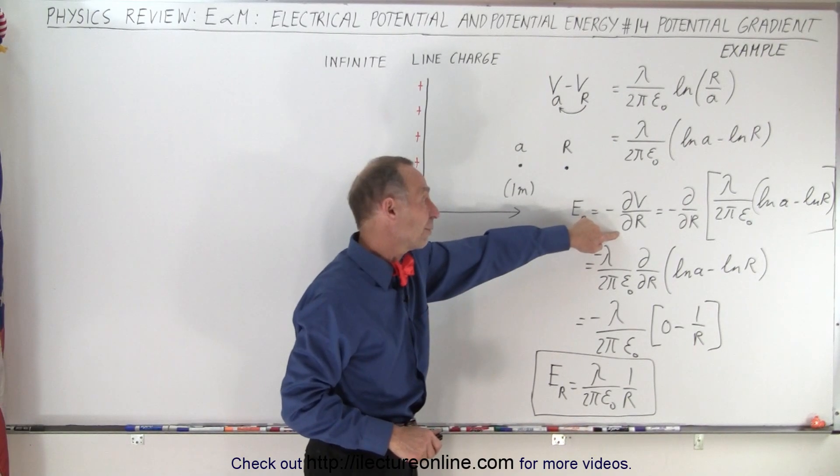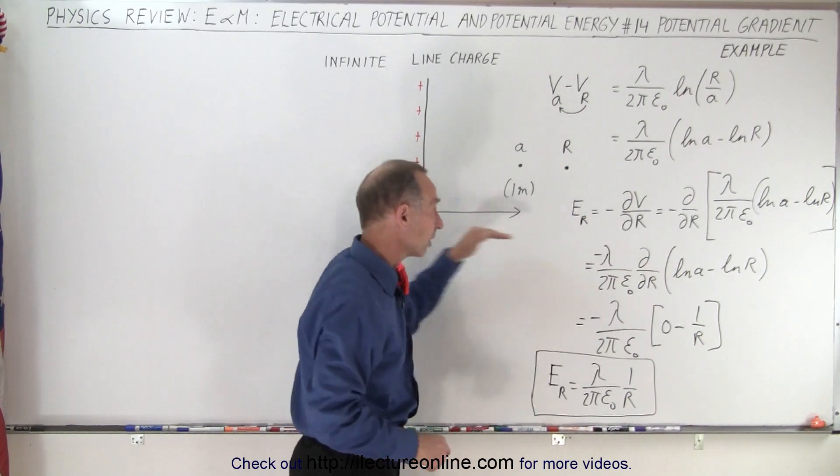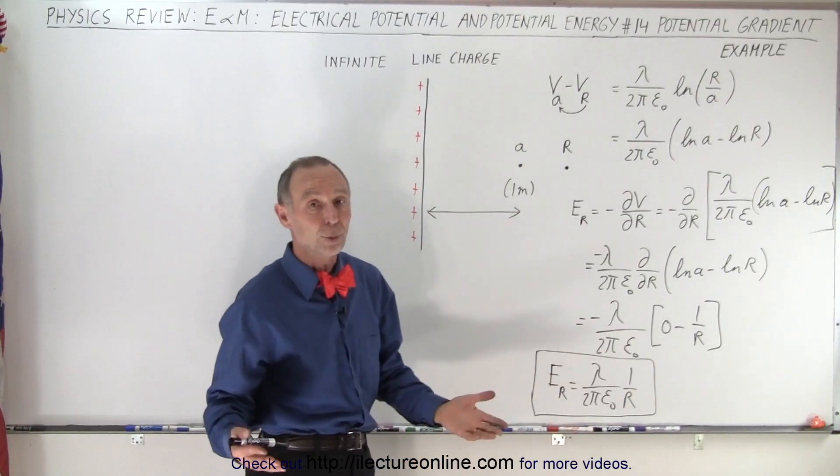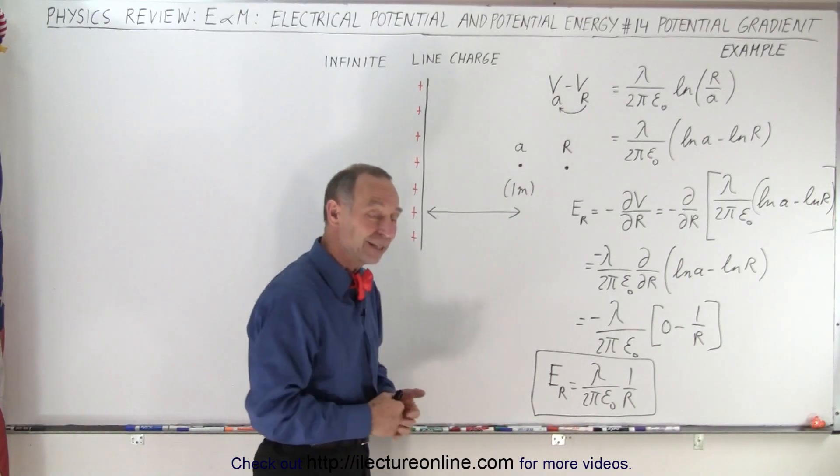But in this case, we got it by using the potential gradient, by taking the definition of the voltage difference, taking the negative partial derivative with respect to R, the direction that we want the electric field in, and we end up with the very same equation. That is how it's done.